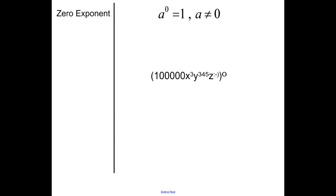Anything raised to the power of 0 equals 1 — that doesn't hold true for 0 itself, but we won't cover that here; you can research it online. So if you look at this expression — 100,000 x cubed times y to the 345th times z to the smiley face, all raised to the power of 0 — well, what's the smiley face? Who cares? It's going to equal 1. Anything except 0 raised to the power of 0 equals 1.